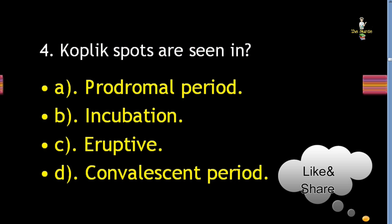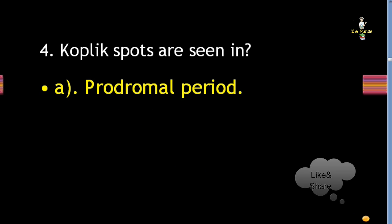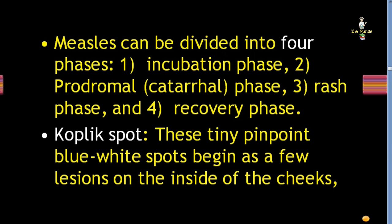Next question: Koplik's spots are seen in which phase? Options: prodromal period, incubation period, eruptive stage, or convalescent period. Correct answer is prodromal period. Measles can be divided into four phases: incubation phase, prodromal or catarrhal phase, rash phase, and recovery phase. Koplik's spots are tiny pinpoint blue-white spots that begin on the inside of the cheeks.